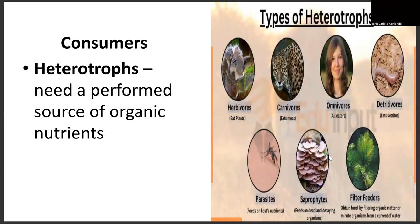Next would be consumers. Generally they are called heterotrophs. They need a preformed source of organic nutrients and are not capable of producing their own food like autotrophs, since they lack chlorophyll. The tendency is for them to feed on these autotrophs and transfer energy from one organism to another through the food chain.